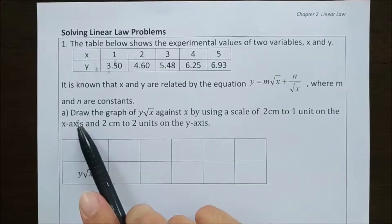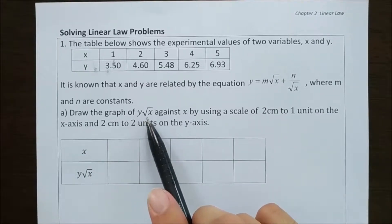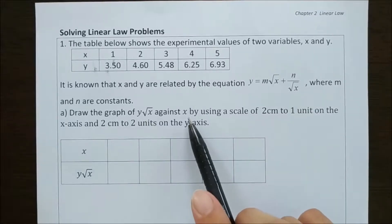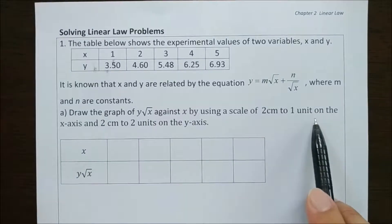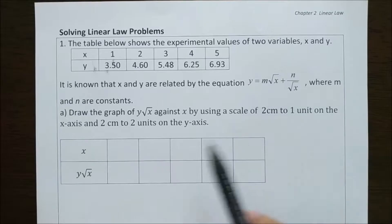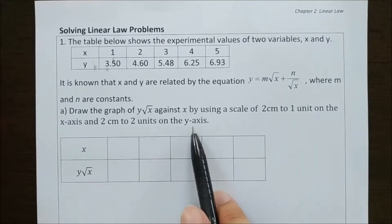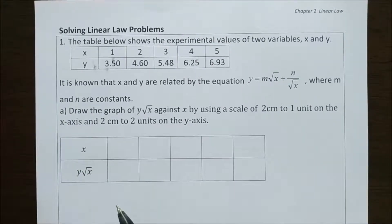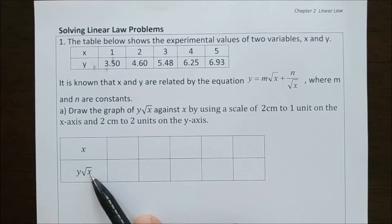First, draw the graph of y multiplied by the square root of x against x, using a scale of 2 cm to 1 unit on the x-axis and 2 cm to 2 units on the y-axis. Before we plot the graph, we need to find the values of the x-axis and y-axis.